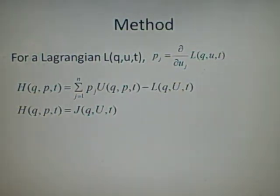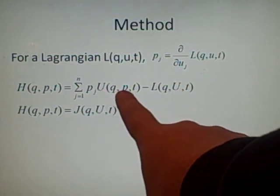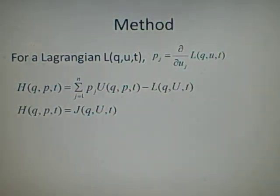So instead of a little u, it's got a big U. Now the big U is, as it says here, it's a function of Q, P and T. So it's just U as a function of Q, P and T.